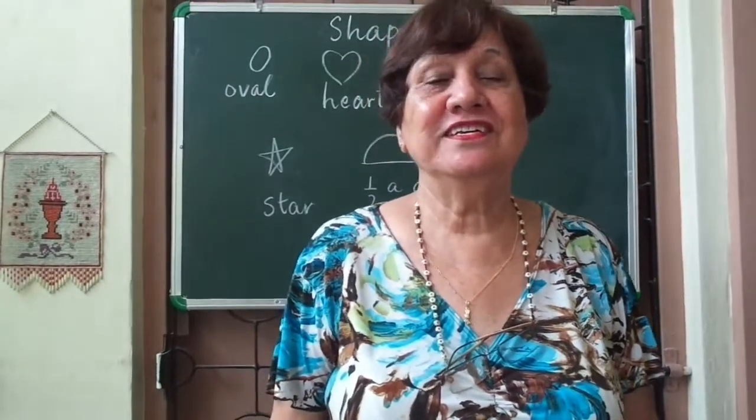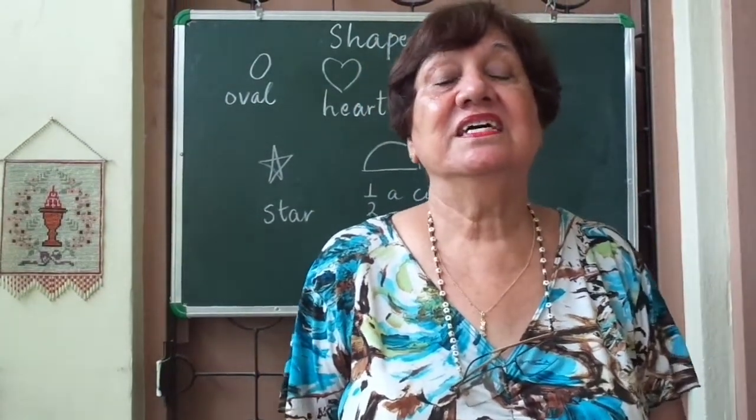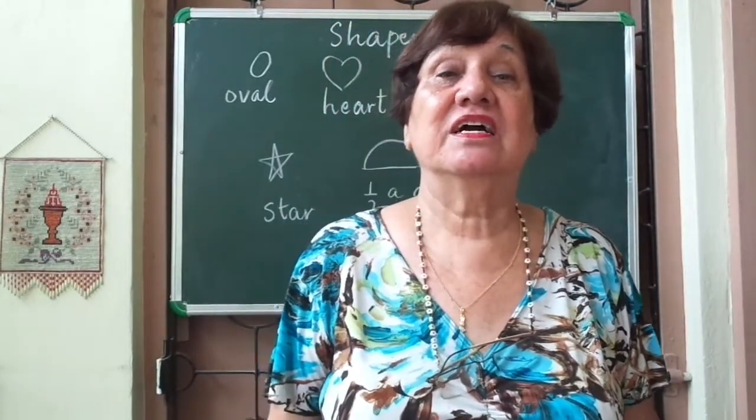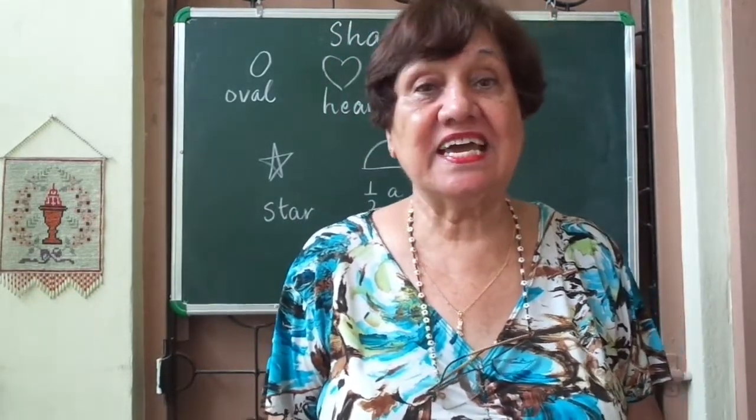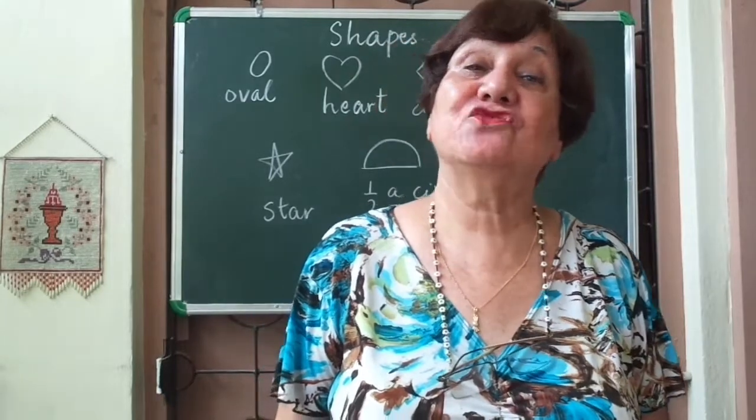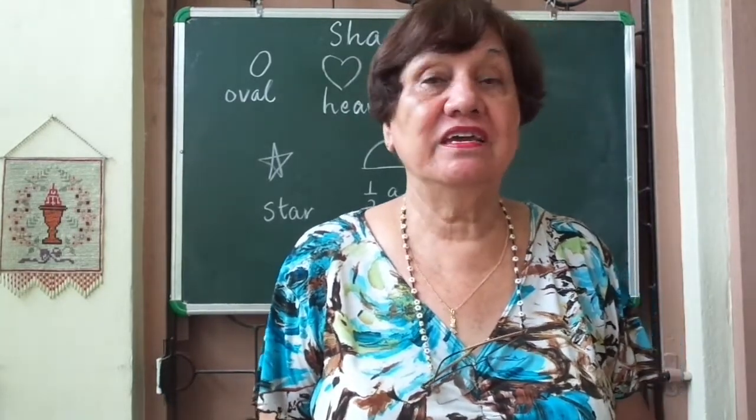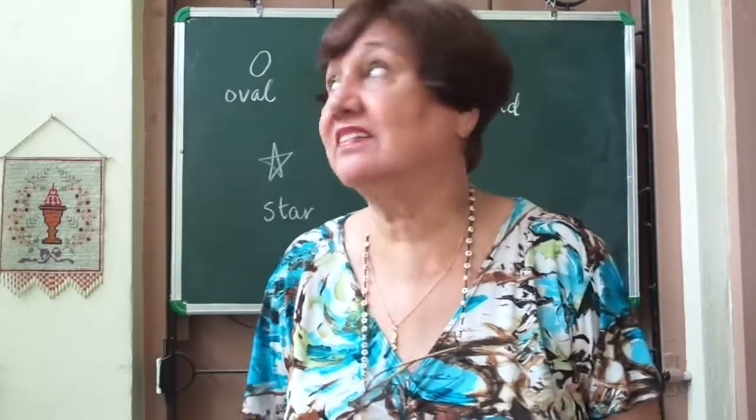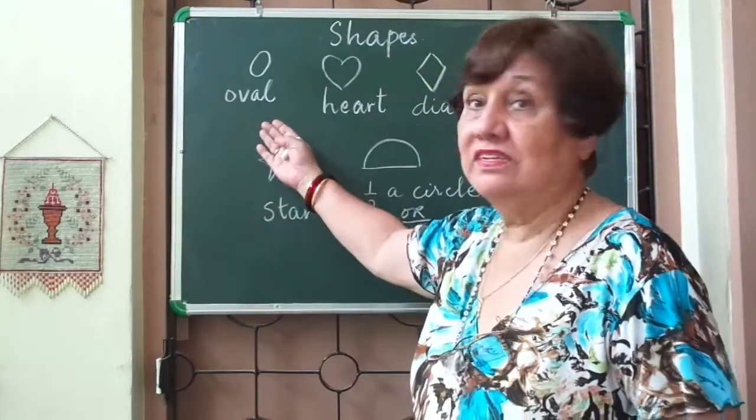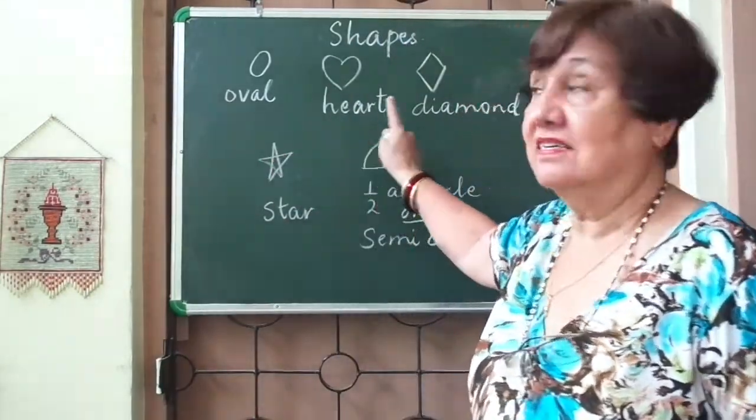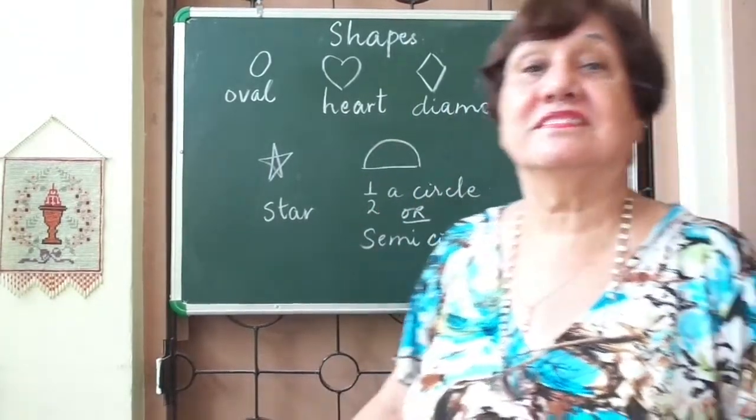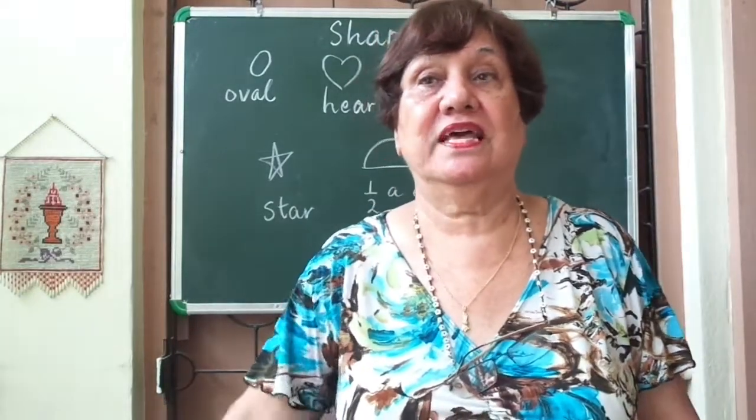Good morning children. Earlier we had learnt the shape of a circle, a square, a rectangle and a triangle. Today we are going to learn other shapes and what shapes are they? They are oval, heart, diamond, star and half a circle. So we will be doing that.